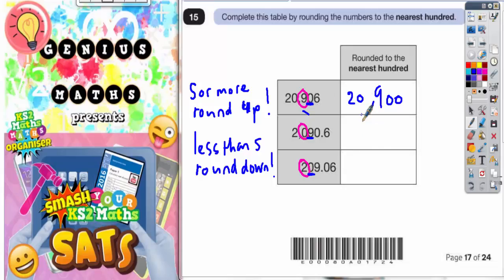On the second question, the digit after the hundredth digit is the nine, so that's nine standing for ninety. Now ninety is above fifty and the nine is above five, so we need to round up. So 90 to the nearest 100 is 100, so this is going to end up being 2,100.